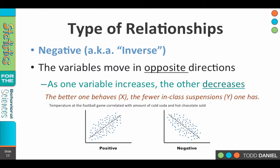On the other hand, we could have a negative or inverse relationship, where as one variable goes up, the other goes down. Therefore, they move consistently in opposite directions. So if we look at your classroom behavior and how many in-class suspensions you get, we find that the better your behavior, the fewer in-class suspensions you have.